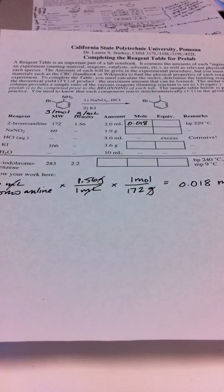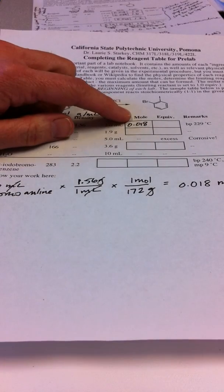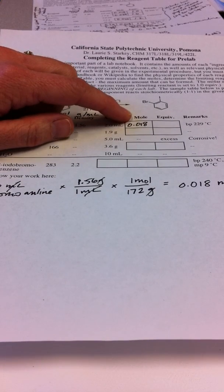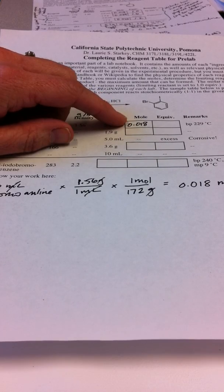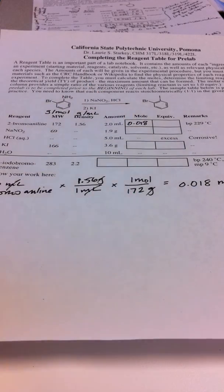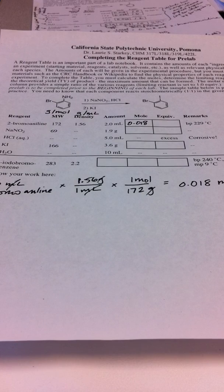Now a lot of times these mole amounts are very small numbers. So if you want to call this column millimoles, then you can multiply these by 1,000. We could just say there's 18 millimoles of 2-bromoaniline. That might be a convenient title you can have.